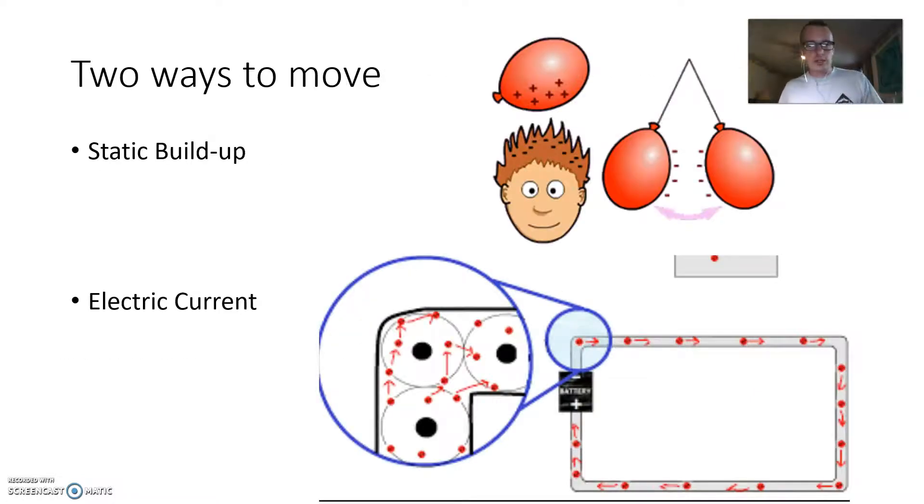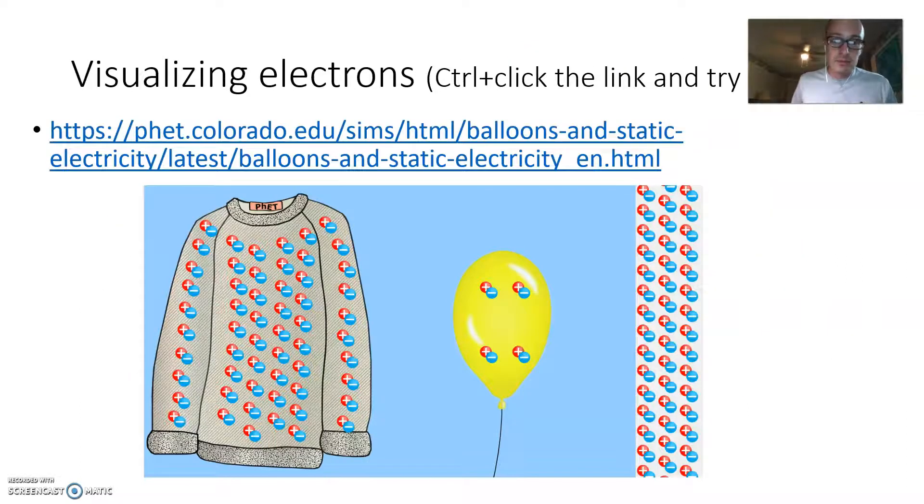So let's continue on here. We can either build up a static charge or we can have an electric current. We mentioned there's electrostatics and there's electric current. And so the first lesson had you guys doing some things with electrostatics and watching a video that kind of explains a little bit about this.